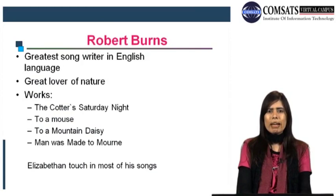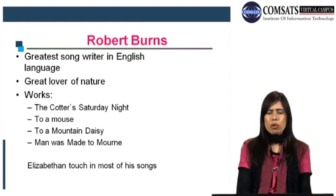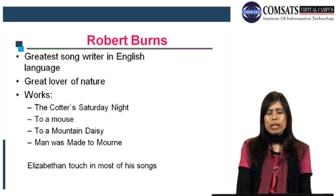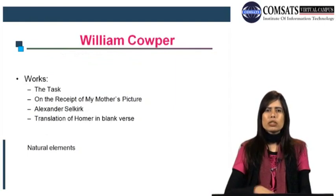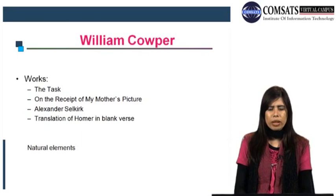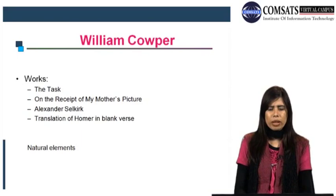Robert Burns is a great songwriter in the English language and a great lover of nature — you can see the essence of romantic spirit in his works. His works include The Cotter's Saturday Night, To a Mouse, To a Mountain Daisy, and Man Was Made to Mourn. In his works you can see the Elizabethan touch in most of his songs — instead of following classical writers, he followed Elizabethan writers. William Cowper's works include The Task, On the Receipt of My Mother's Picture, Alexander Selkirk, and Translation of Homer in Blank Verse — all containing natural elements and the romantic spirit.